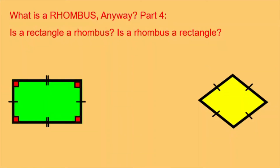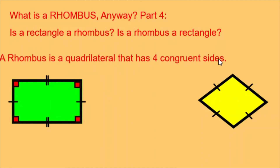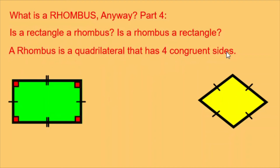Now let's answer the question: is a rectangle also a rhombus, and is a rhombus also a rectangle? We have a green rectangle showing its internal 90-degree angles and two sets of congruent sides, and a yellow rhombus showing its four congruent sides. A rhombus is a quadrilateral with four congruent sides — the yellow rhombus follows this rule, but the green rectangle does not. However, squares are also rectangles and have four congruent sides, so some rectangles — the ones that are squares — are also rhombuses.